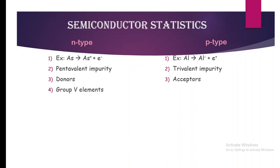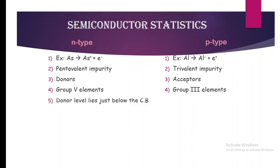The pentavalent impurities or donors belong to group 5 of the periodic table, which is column 15, whereas for p-type, group 3 elements are used in doping.